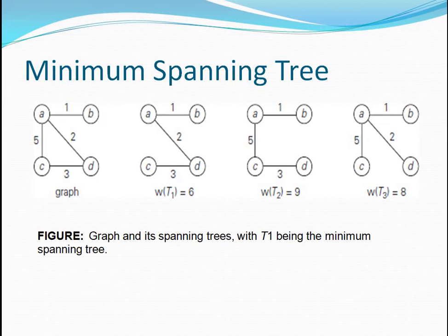Let us see an example for the minimum spanning tree. Here you could find four different graphs. The first one is the given graph containing edges with vertices A, B, C and D. The second, third and fourth graphs show the spanning trees obtained from the first graph. The first graph has a cycle, but the second, third and fourth diagrams do not contain any cycle or closed loop — so we call those spanning trees. The conditions are that all vertices must be covered and there should not be any cycle, and both conditions are satisfied.